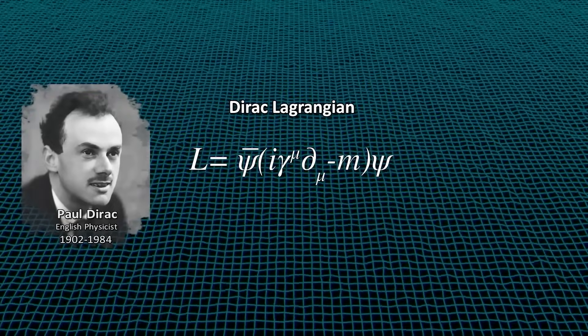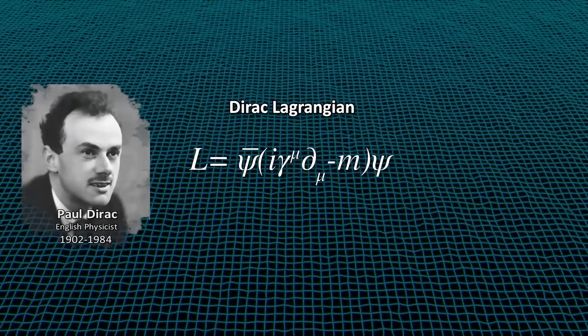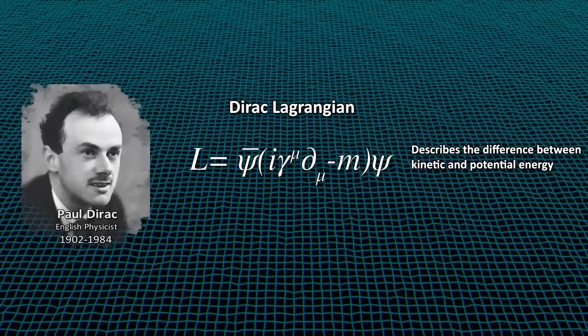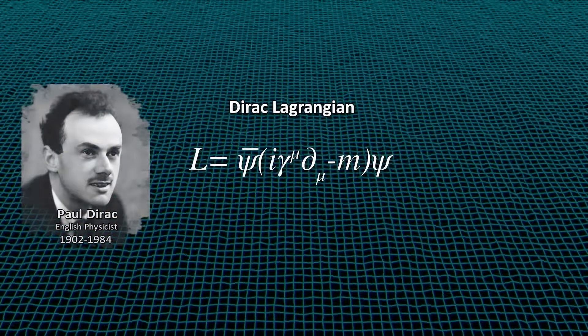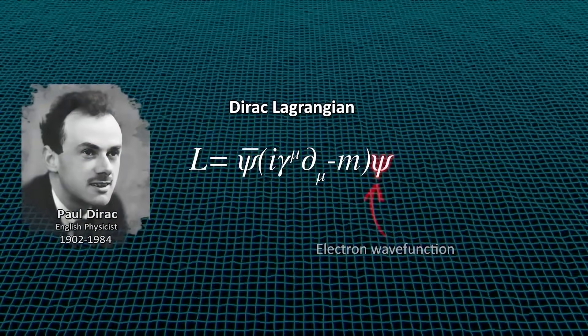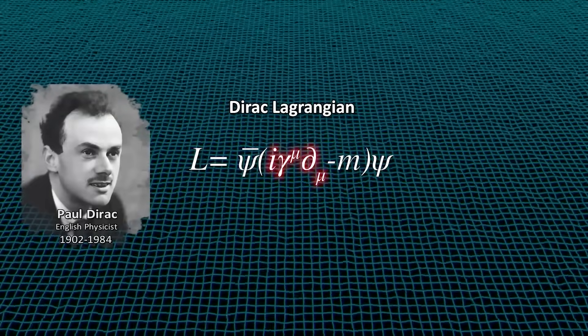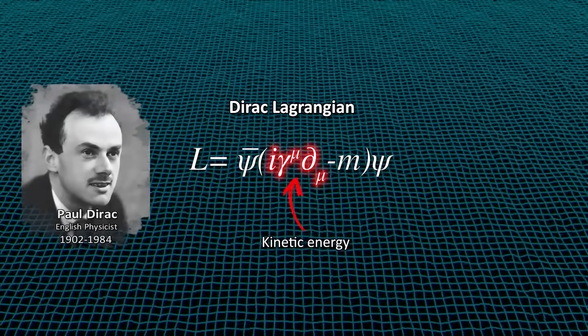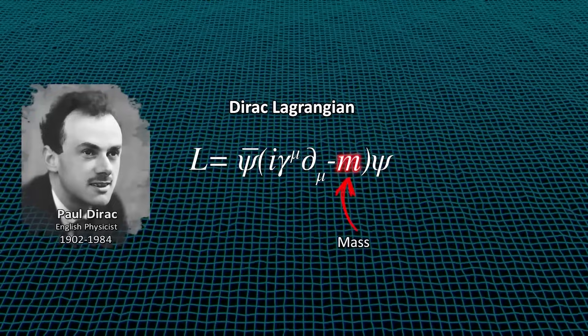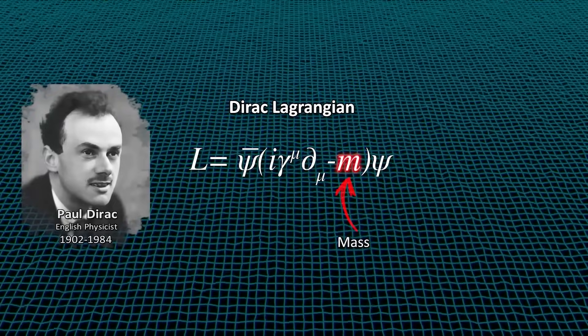Now don't get nervous about the math. I'll explain what we are looking at here. The Lagrangian simply describes the difference between a system's kinetic and potential energy. Since any matter field must contain both particles and its counterpart, antiparticles, both are represented here. The psi bar represents the wave function of the antielectron or positron, and the psi represents the wave function of the electron.